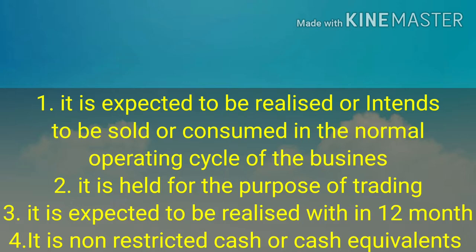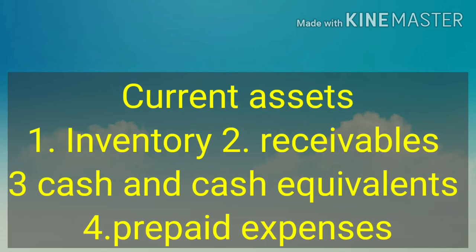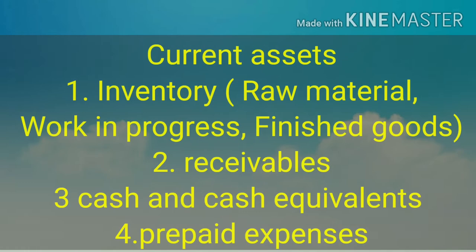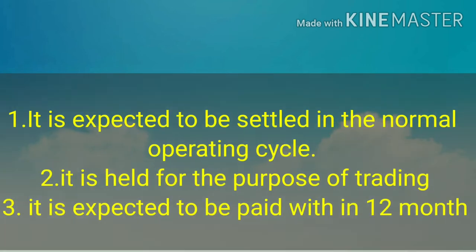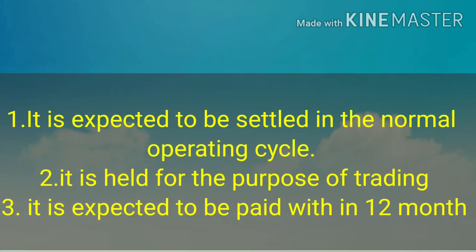These are the four conditions; when all four are satisfied, an asset is called a current asset. Components of current assets are: (1) inventory, (2) receivables, (3) cash and cash equivalents, and (4) prepaid expenses. Inventory can be subdivided into raw material, work in progress, and finished goods.